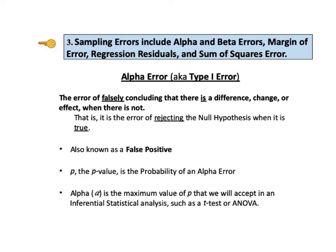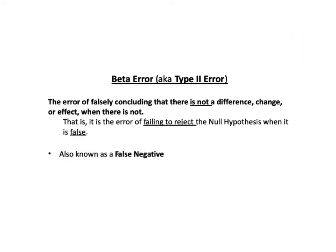Alpha is the number we select — the maximum value of p we will accept in an inferential statistical analysis, such as a t-test or ANOVA. A beta error is the opposite of an alpha error: it is the error of falsely concluding there is not a difference, change, or effect when in fact there is. That is, it is the error of failing to reject the null hypothesis when the null hypothesis is false. A beta error is also known as a false negative.